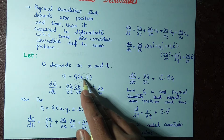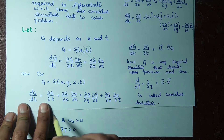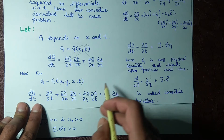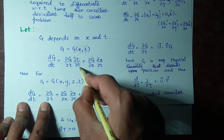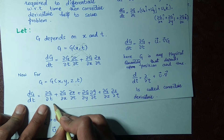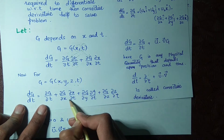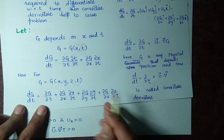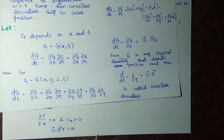This was for one-dimensional x. Now when we extend to three-dimensional position vectors x, y, z and time t, the time derivative similarly starts with ∂g/∂t times ∂t/∂t — the t's cancel, leaving just ∂g/∂t — plus the x-term, then the y-term, then the z-term: ∂g/∂y times ∂y/∂t, and ∂g/∂z times ∂z/∂t.